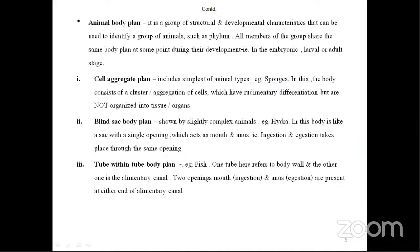Next, the body plan. An organism is having a number of cells — whether these cells are present as a mass or in a particular pattern, that is what we study in the animal body plan. The most primitive one is the cell aggregate plan; example is sponges. In this, the body consists of a cluster or aggregation of cells which have rudimentary differentiation but are not organized into tissues and organs. Sponges do not have tissues or organs well organized — this type is known as the cell aggregate plan.